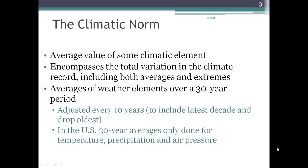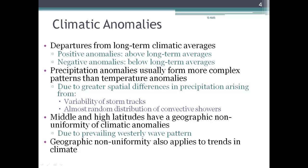A normal is a 30-year average for some particular variables, such as temperature, precipitation, air pressure. It can be an annual normal or a normal for Arizona for the month of July. It's a 30-year average, and the 30-year time period is updated regularly in 10-year increments. Anomalies are departures from these normals, from these long-term climatic values. Positive anomalies mean they are above the averages; negative anomalies mean they're below the averages.